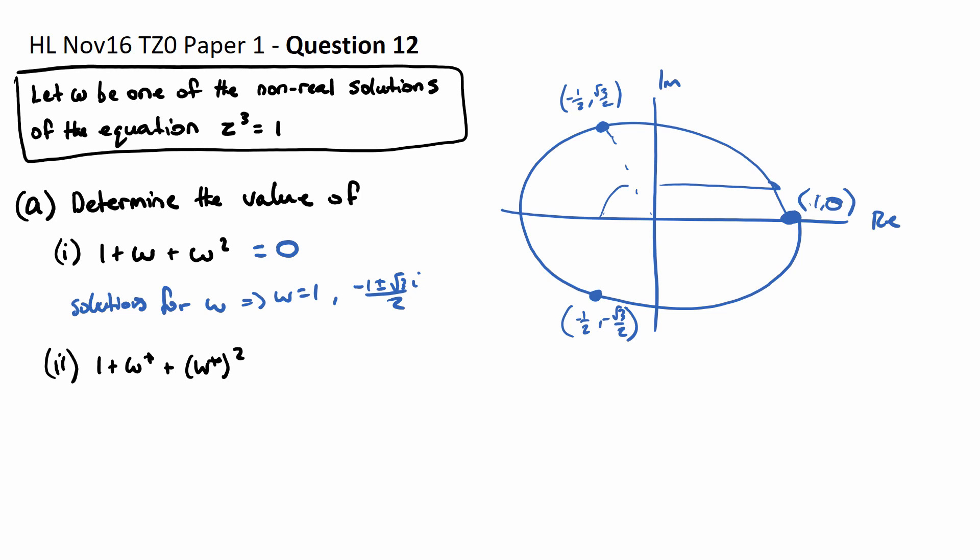Now because we have a power to a power for this third term, we can write this as 1 plus w conjugate plus w squared conjugate and I'm hoping this makes a bit of sense.